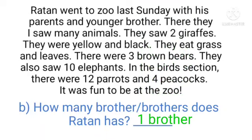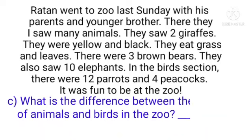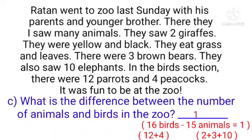Now let us see number three: what is the difference between the number of animals and birds in the zoo? The answer will be one, as the total number of birds is sixteen and the total number of animals is fifteen — two giraffes, three bears, and ten elephants make fifteen. Twelve plus four gives sixteen for birds. So the difference is one.